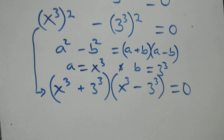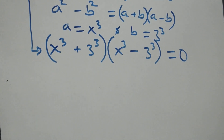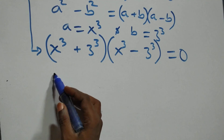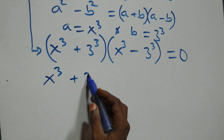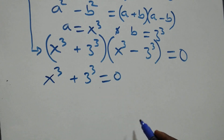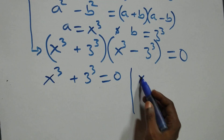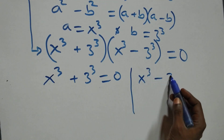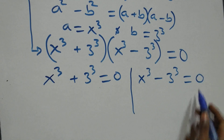For this next step, we have two cases. First: x raised to power 3 plus 3 raised to power 3 equals to 0, or we have x raised to power 3 minus 3 raised to power 3 equals to 0.